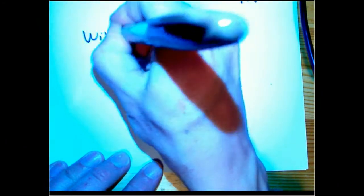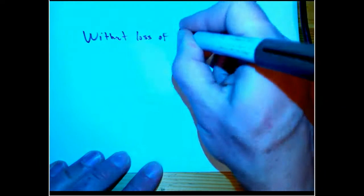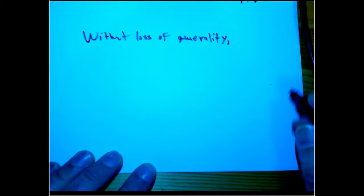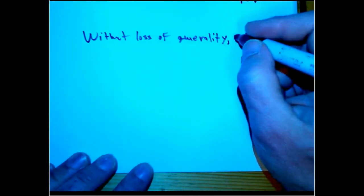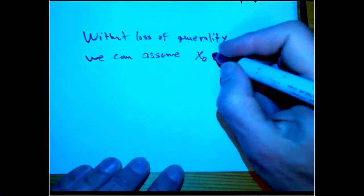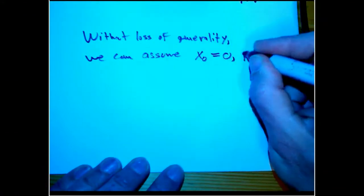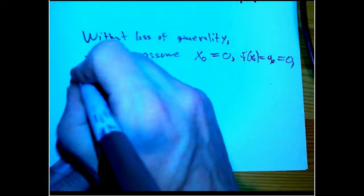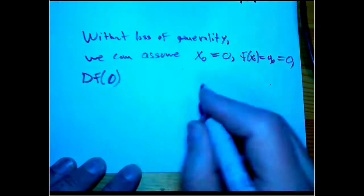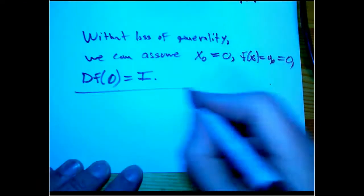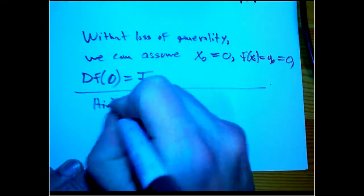Without loss of generality, we can assume, we can just prove this in the special case where x_0, our base point that we're working around, is equal to zero, and that f of x_0, in other words y_0, is equal to zero, and that the derivative at zero, at our base point, is equal to the identity matrix.